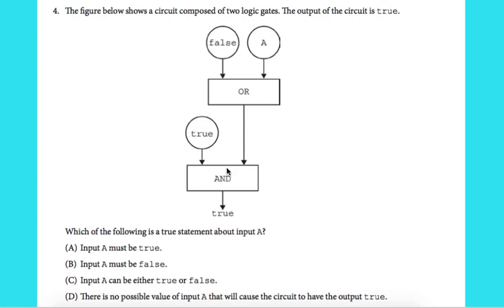Now we are on question number 4, AP Computer Science Principles exam questions. Let's read the question. The figure below shows a circuit composed of two logic gates. The output of the circuit is true. Which of the following is a true statement about input A?